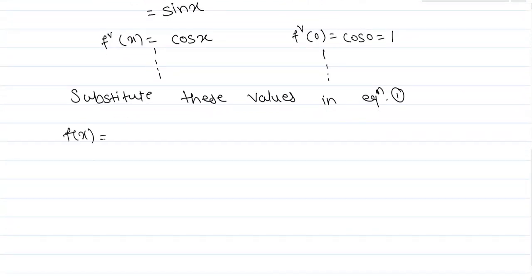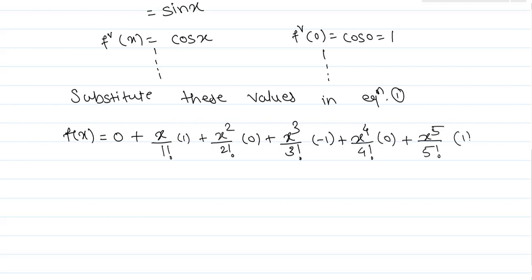f(0) is 0, x/1! f'(0) is 1, plus x²/2! f''(0) is 0, plus x³/3! where the next derivative is -1, x⁴/4! is 0, and x⁵/5! where the derivative at 0 is 1. So we get the expansion...